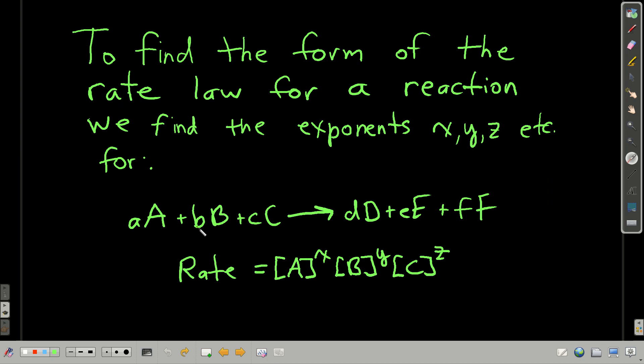So in general, if we have our generic chemical reaction where the lowercase letters are the coefficients and the capital letters are the symbols or formulas for the compounds, aA + bB + cC goes to dD + eE + fF. If you want to find the form of the rate law for this reaction, what that means is we know that the rate is going to be equal to the concentration of each of the reactants raised to some power X, Y, and Z.